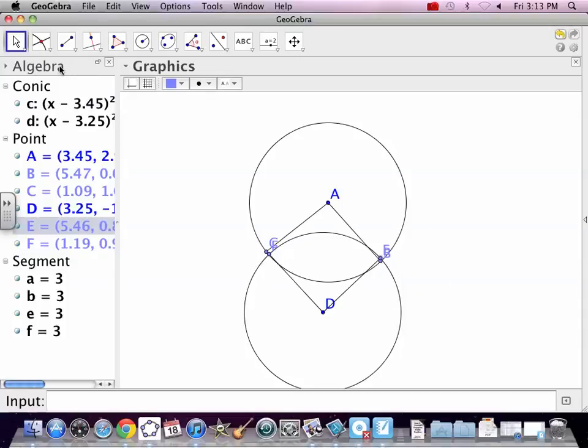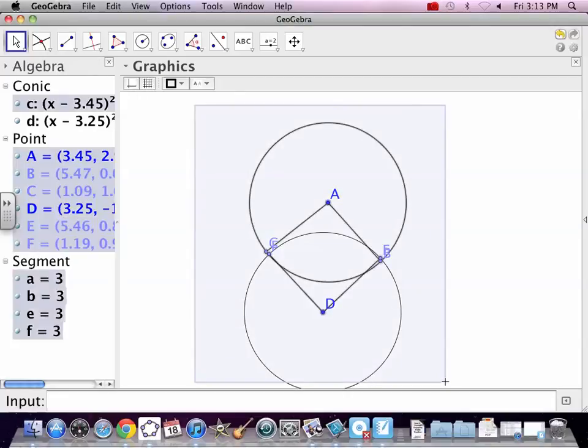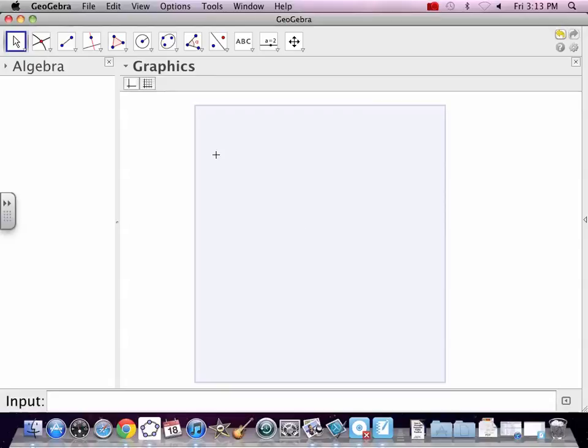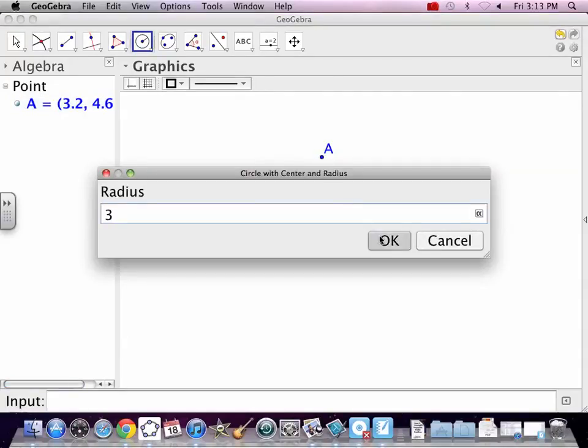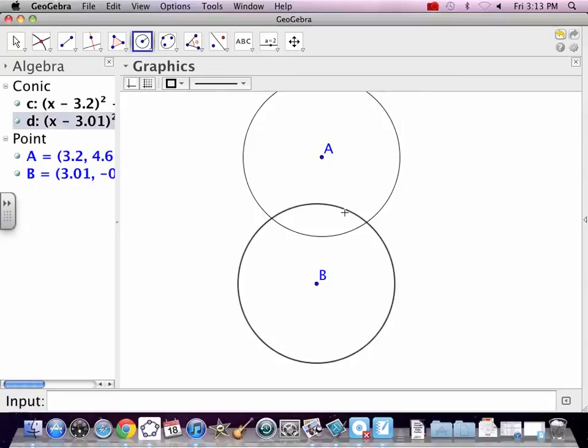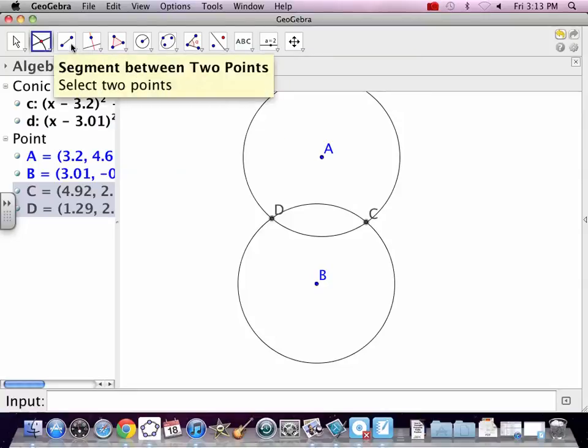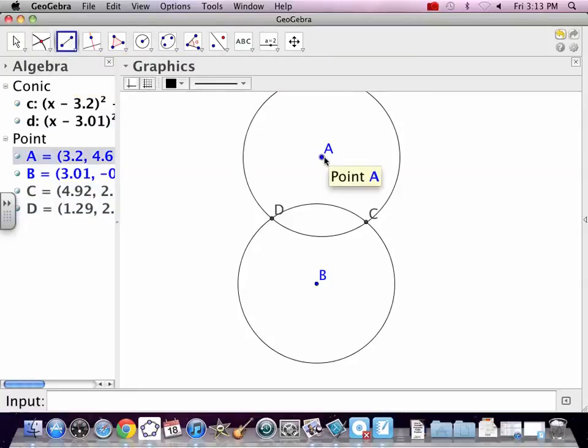So, easiest way to do that is kind of what you see right there. But do this from the beginning. Start with two circles across. We always want things to cross. Intersections are what matters. So, circle, center, and radius. Three. Okie dokie. And then we'll draw one down here. Three. Find where they cross. That's that intersection tool. Boom. There are the corners of our rhombus. Connect the dots.